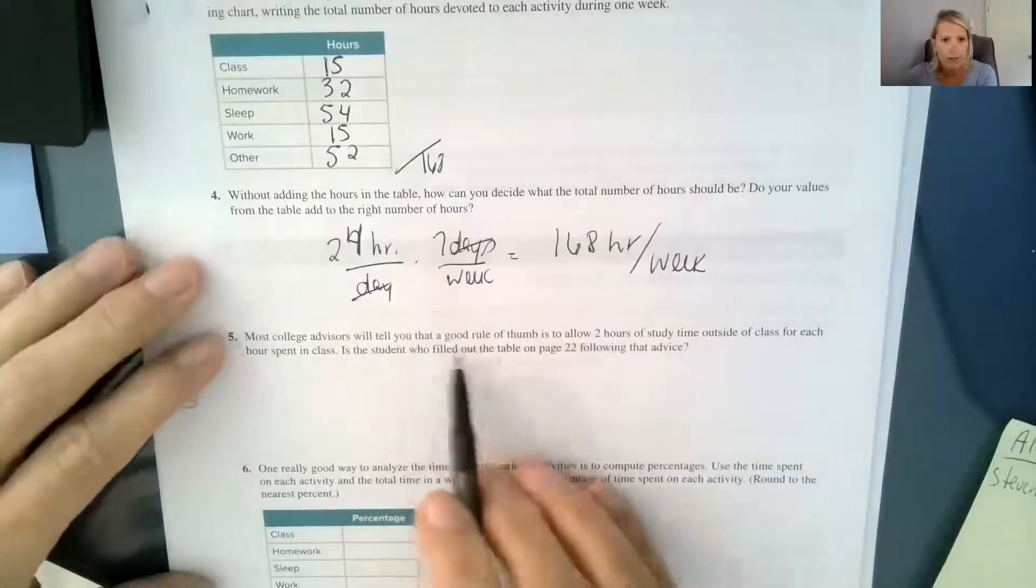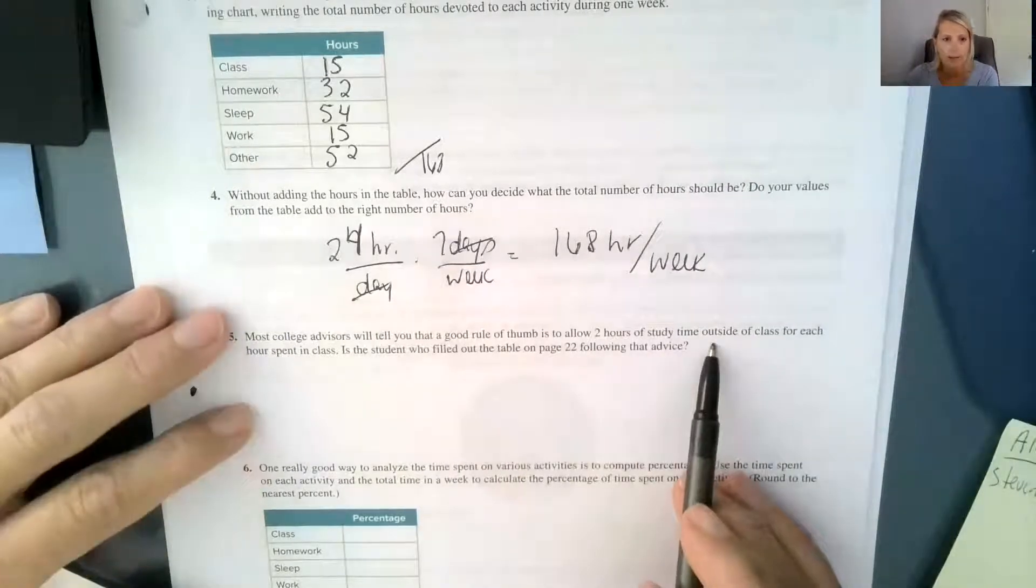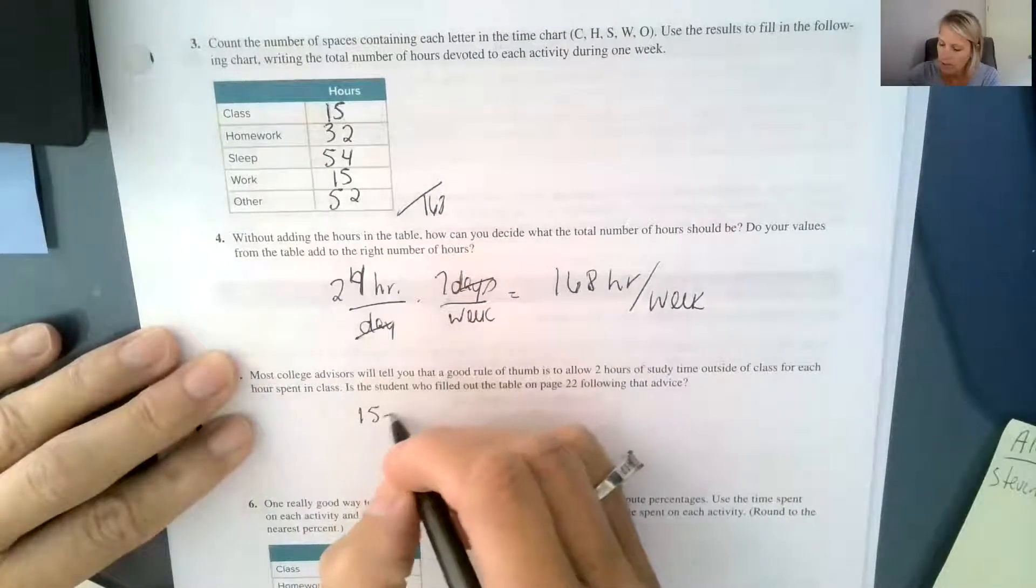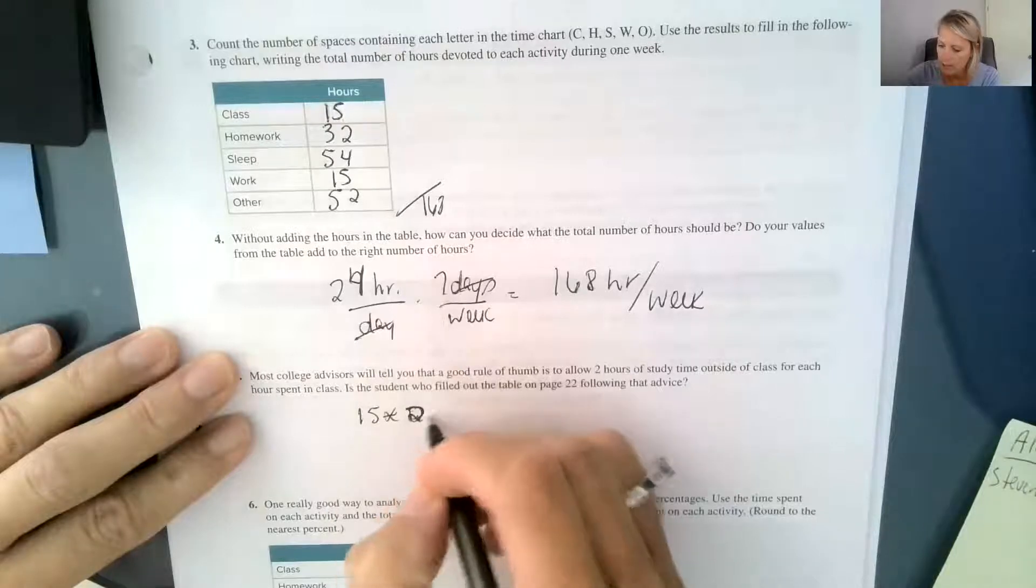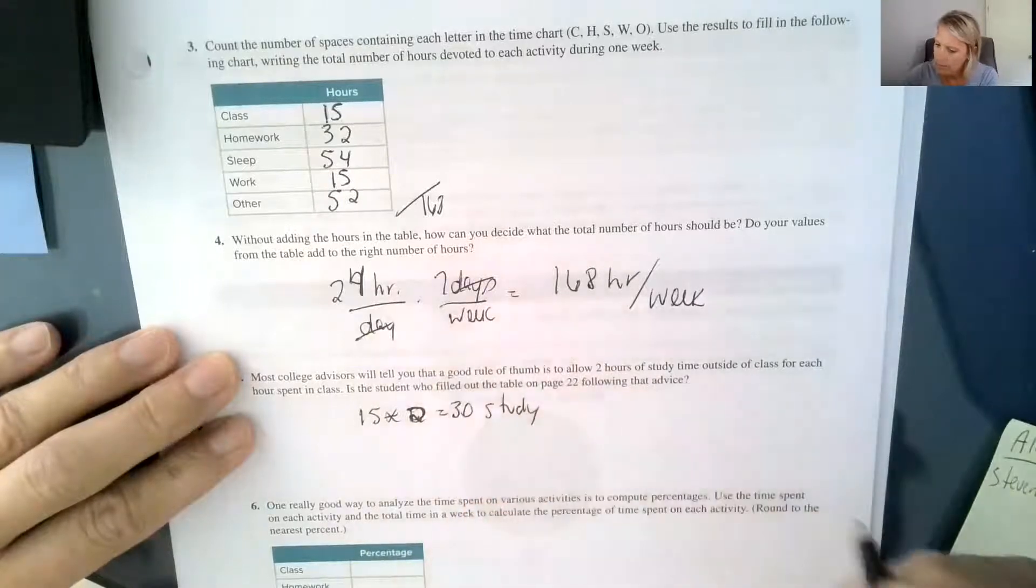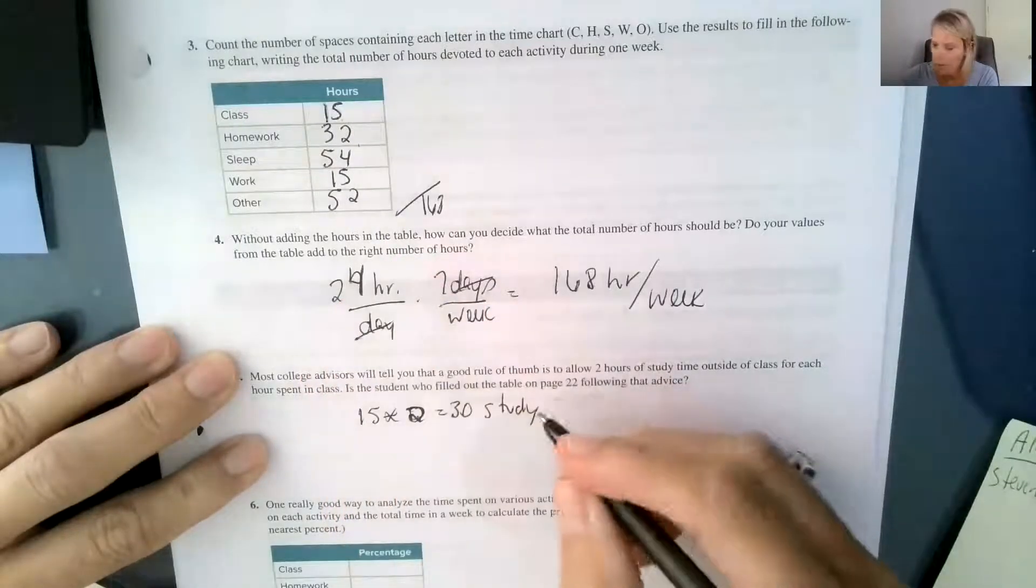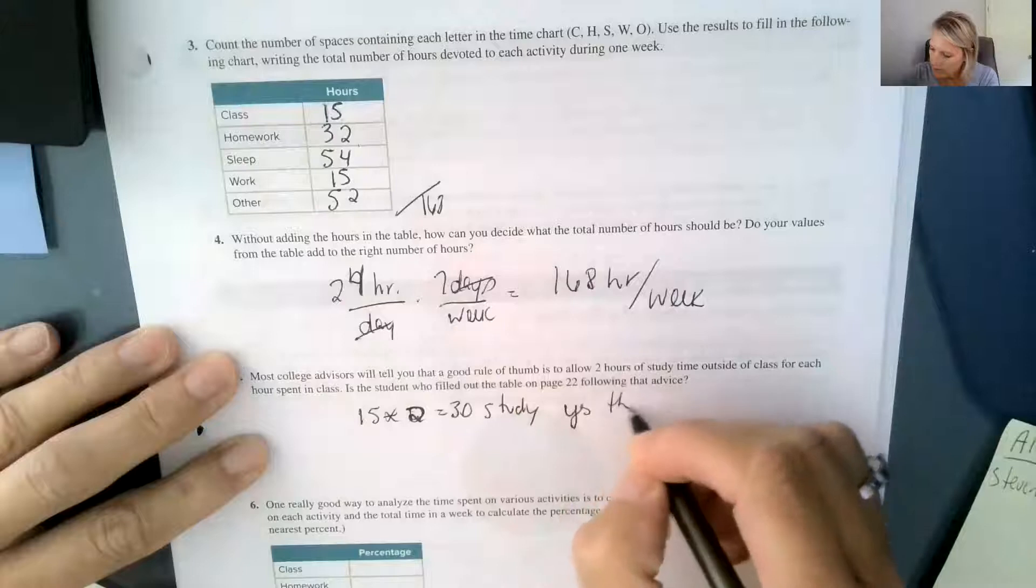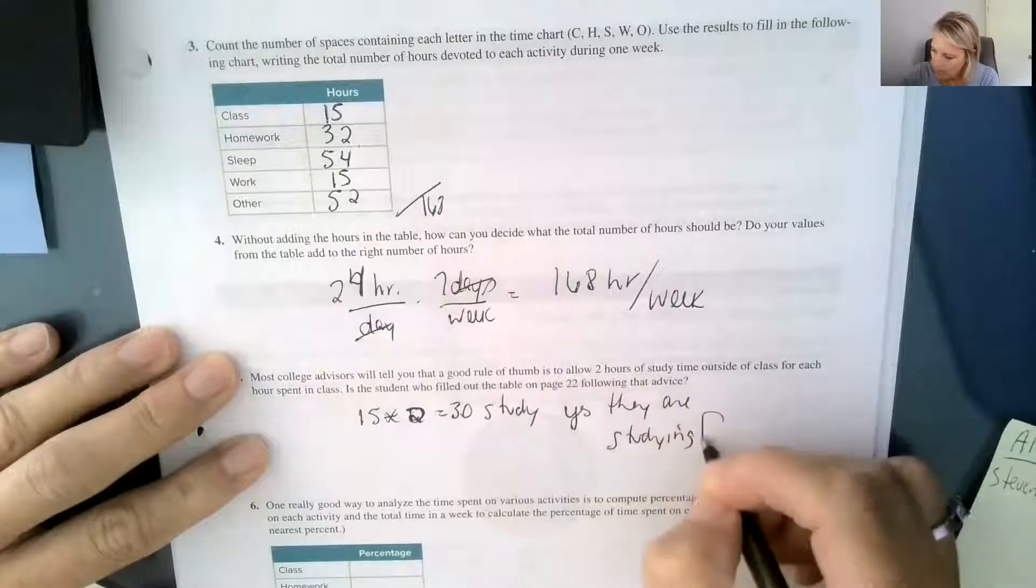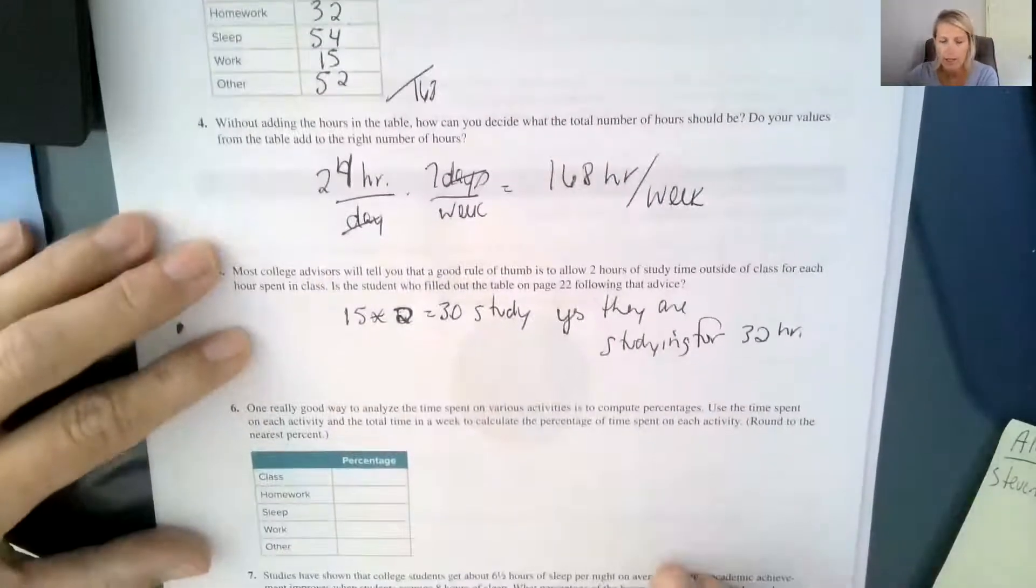Most college advisors will tell you that a good rule of thumb is for every hour that you're in class, you should spend two hours of study time outside of class. So if they're in class for 15, then they should be spending 15 times two for 30 hours of study. And it looks like they're spending 32. So yes, they are studying for 32 hours. So it looks like they're spending enough time on that, that's good.